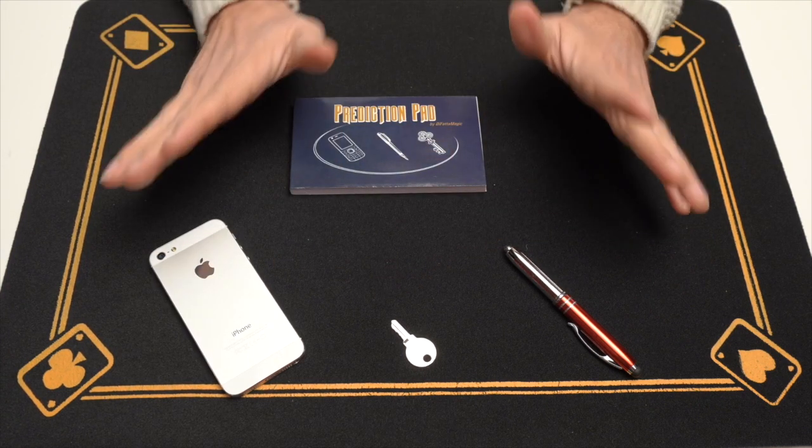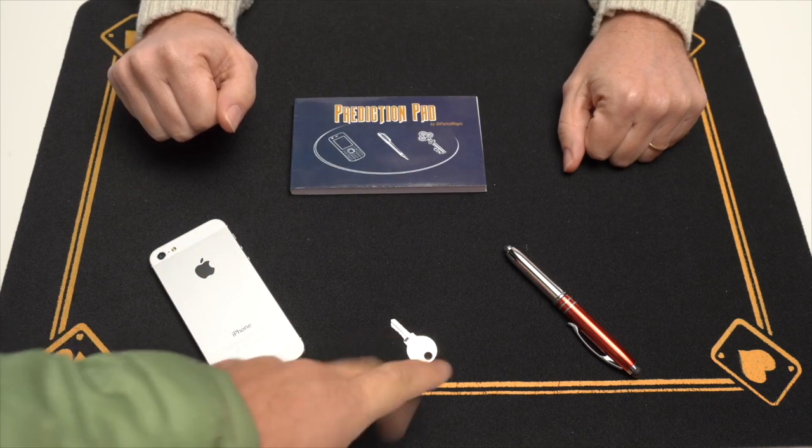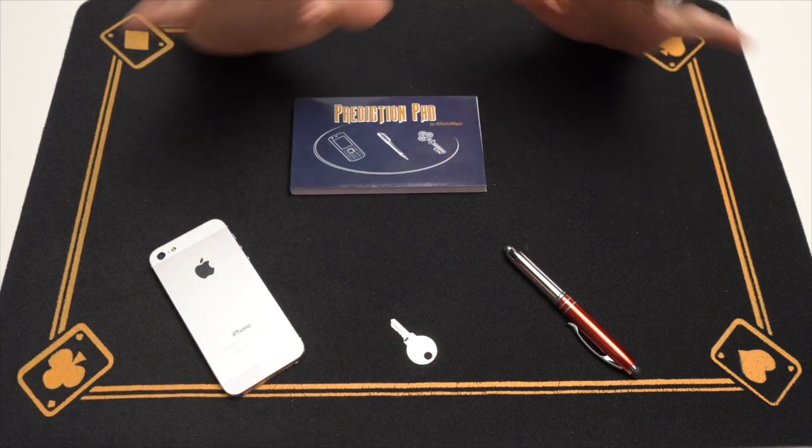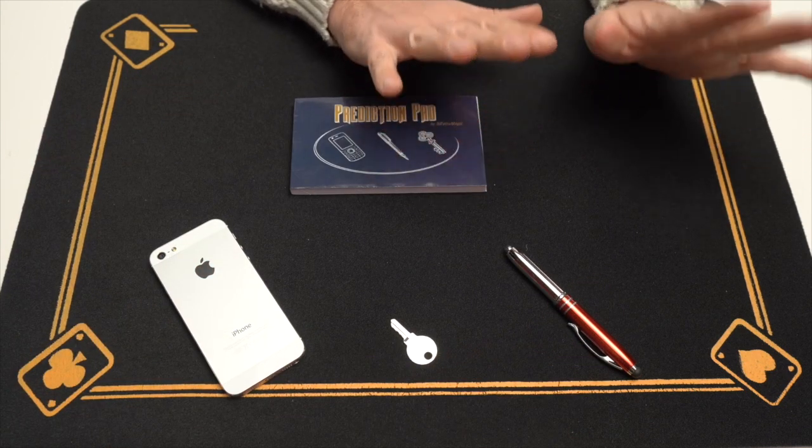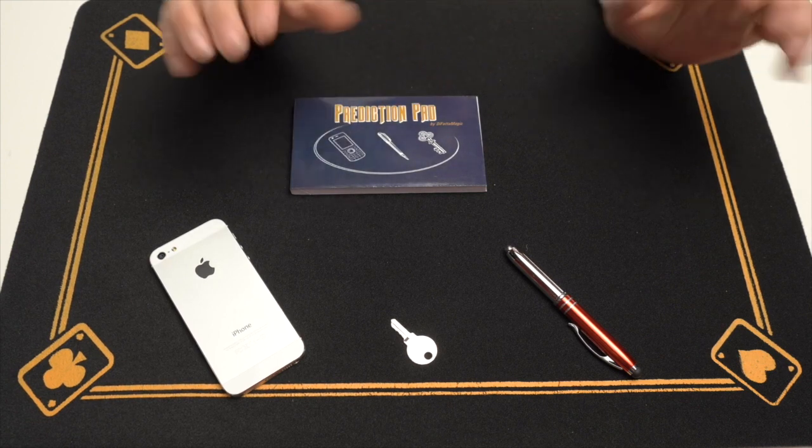Stefano, choose any one of these three objects. Key. Key? Okay. Are you sure? Do you want to change? No, no. Pen. Pen? Yes. Okay, so you choose the pen. Yes. Perfect.